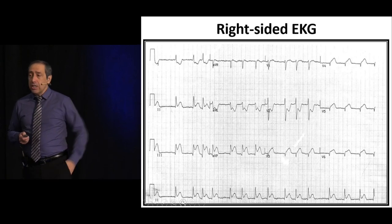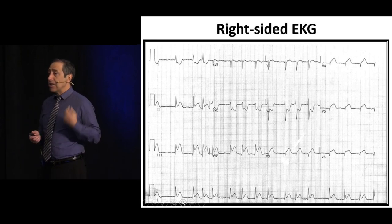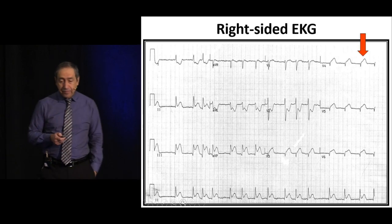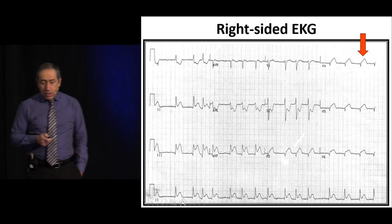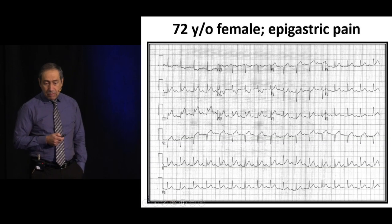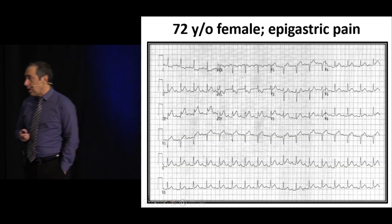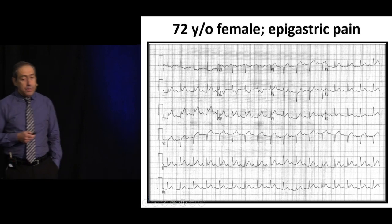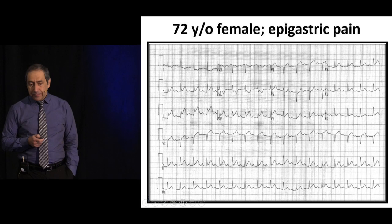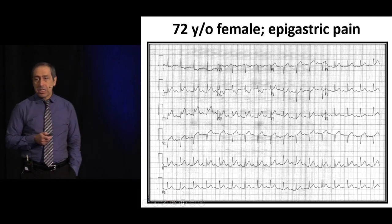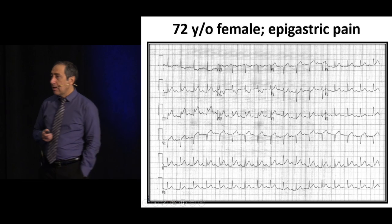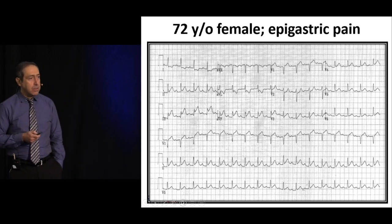Here is our right-sided EKG. Remember, we're not going to remove the original sticker — just take a new sticker and put it on the other side, fifth intercostal space, mid-clavicular line. Now, this is a good EKG example of what you've learned. Do we have ST elevations in the inferior leads? We do — ST elevations in leads 2, 3, and AVF. Do we have reciprocal changes in AVL? Yes. So this is inferior myocardial infarction.